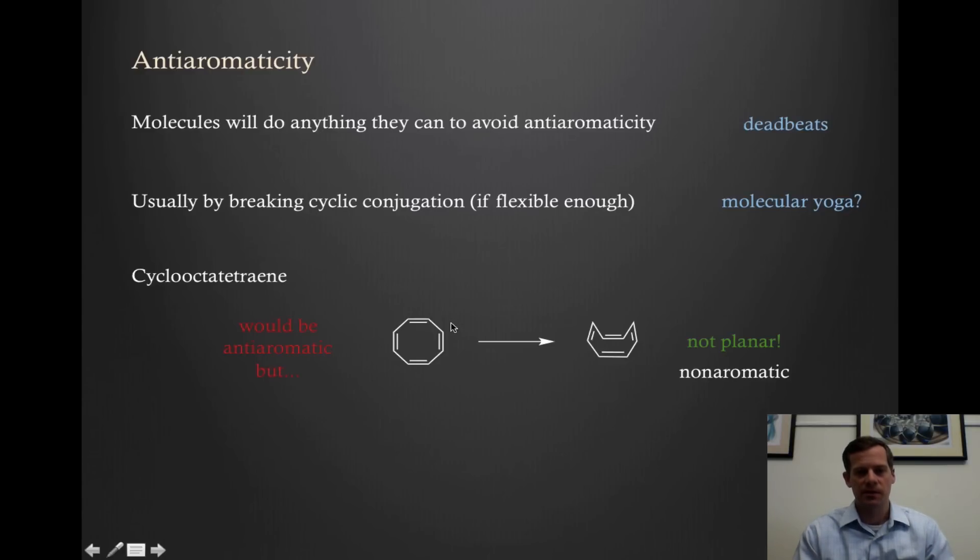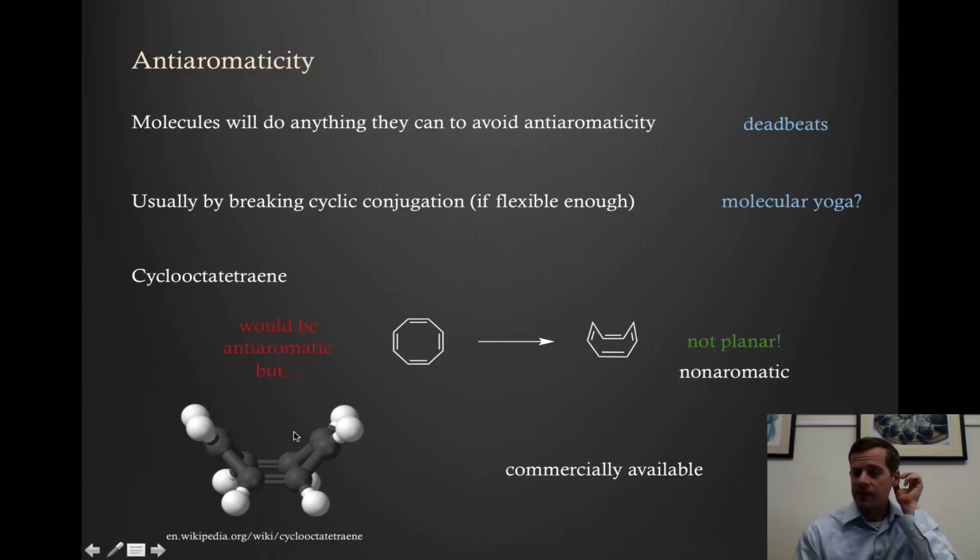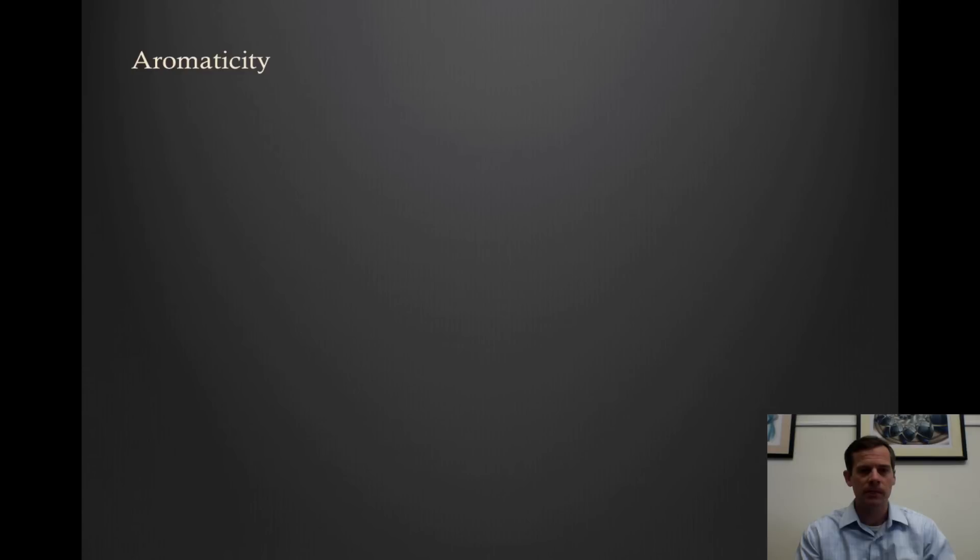It has enough flexibility that it can adopt this sort of tub shape. Since now these pi systems are no longer conjugated, it doesn't fulfill the requirements for antiaromaticity. So cyclooctatetraene is not aromatic and it's not antiaromatic. In fact, it's nonaromatic, because it doesn't have cyclic conjugation. Here's just a simple three-dimensional representation of cyclooctatetraene where you can pretty clearly see the tub shape. This is certainly not a planar system. In fact, cyclooctatetraene is commercially available. It's used somewhat regularly in organic chemistry. It certainly isn't like cyclobutadiene, which is very reactive.